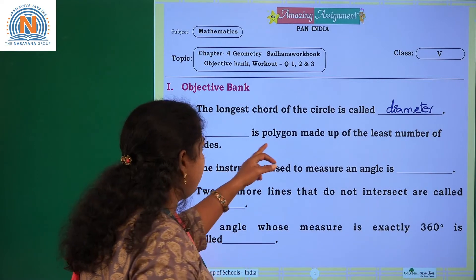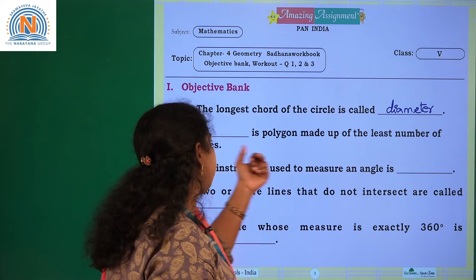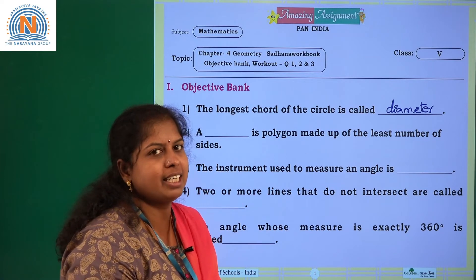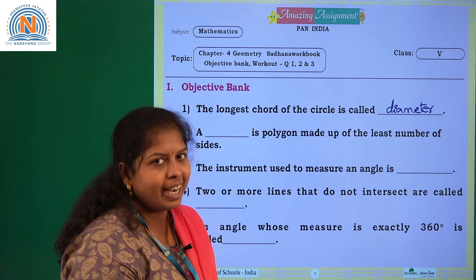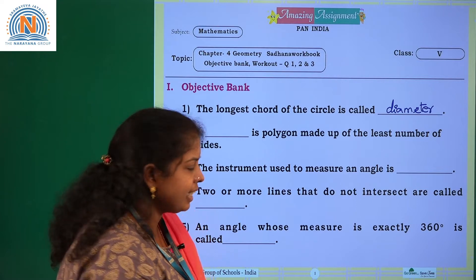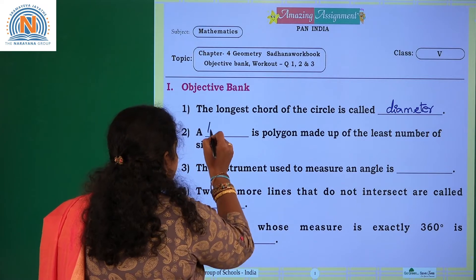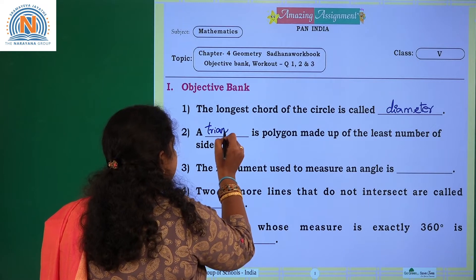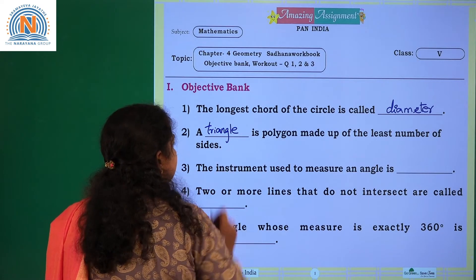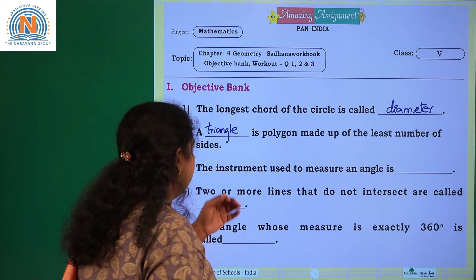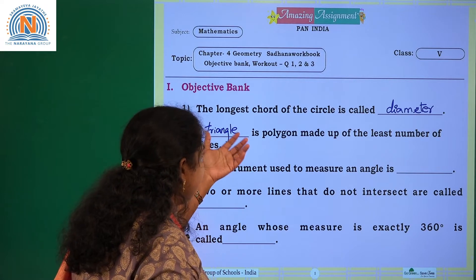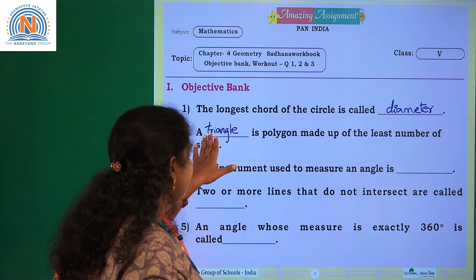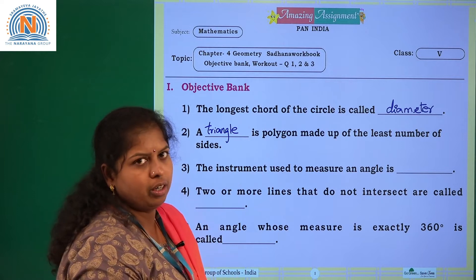A dash is a polygon made up of the least number of sides. Which polygon has the least number of sides? A triangle. A triangle has the least number of sides — that means three sides. Three sides is the least number of sides for a polygon.